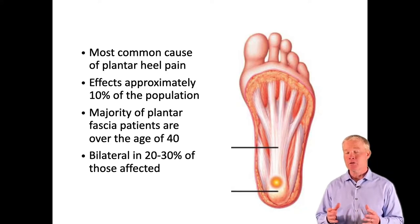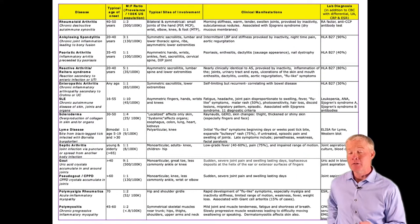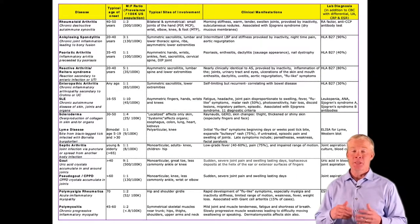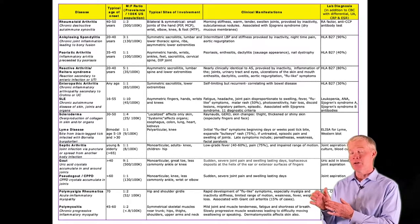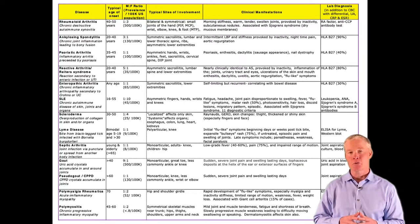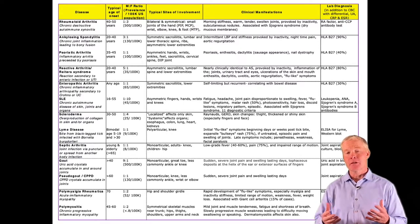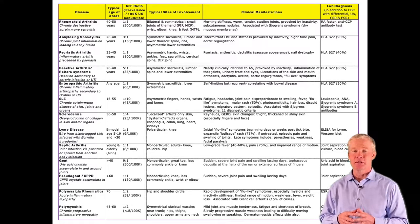Plantar fasciitis is often unilateral, but in 20 to 30% of cases it can be bilateral. In a bilateral condition like plantar fasciitis, it may be something systemic. In fact, 16% of bilateral heel pain cases are actually arising from an inflammatory arthropathy — something like rheumatoid arthritis. I'm going to pass along an infographic as a handout you'll be able to download from the resource at the end of the presentation.